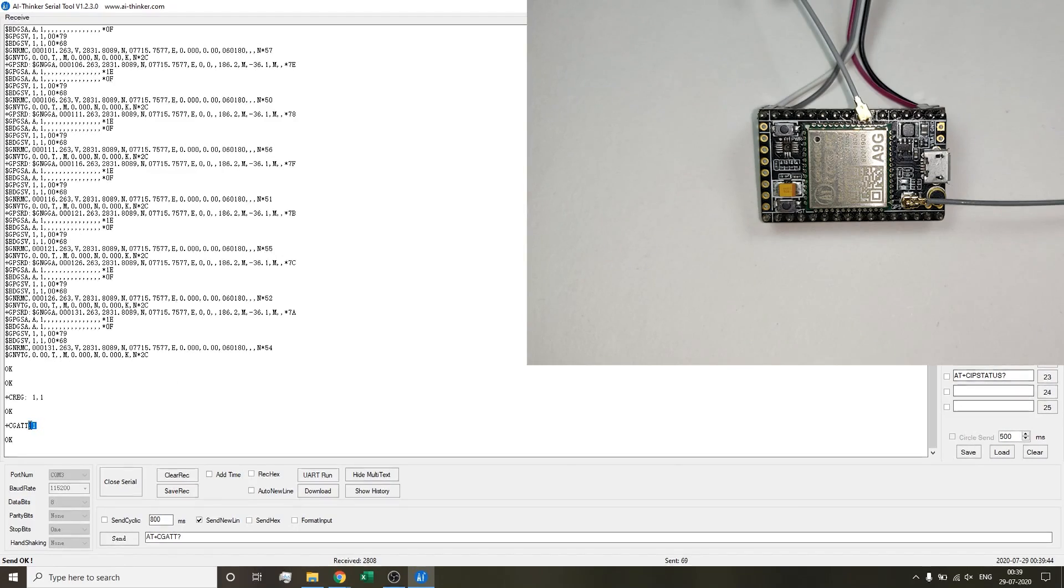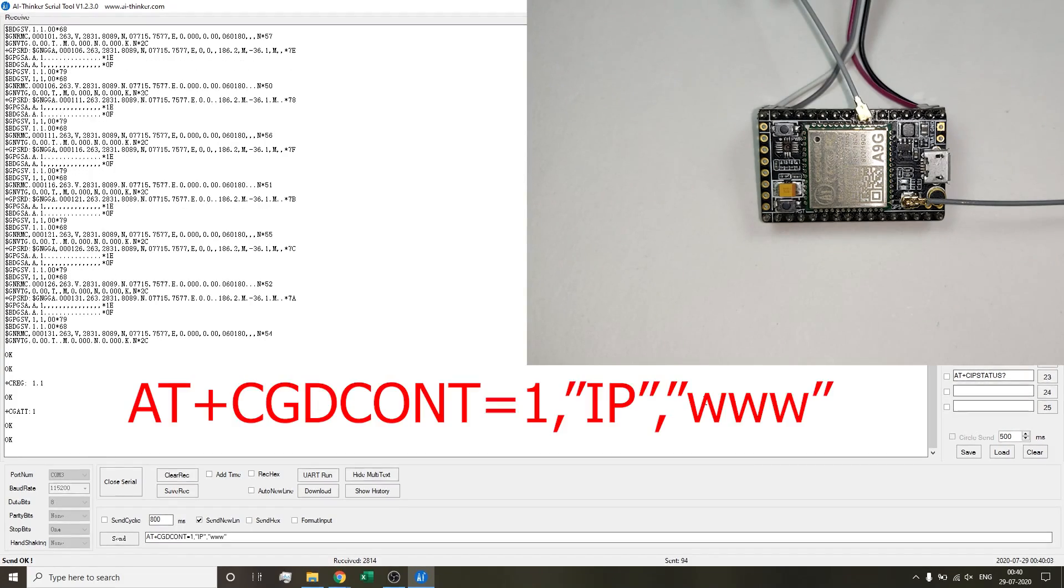For connecting to the internet, we need to use the APN name and connect to the internet using GPRS. For that, the following command is used: AT+CGDCONT=1,"IP","www". The 1 means we need to connect, the second parameter IP is the internet protocol that we are connecting to, and the third one, www, is the access point name of the network that I am using right now.